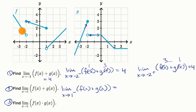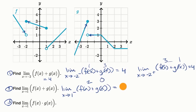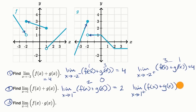The limit as x approaches one from the left-hand side of f of x plus g of x: as we approach one from the left, f of x is approaching two and g of x is approaching zero, so this is approaching two. Then the limit from the right-hand side: f of x is approaching negative one and g of x is approaching zero again, so this is approaching negative one.